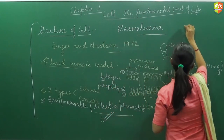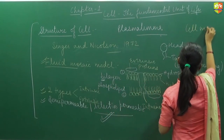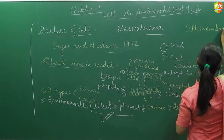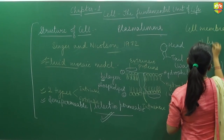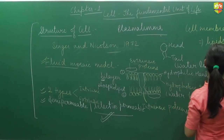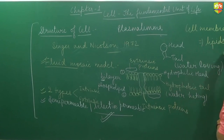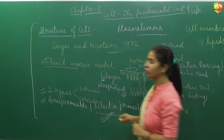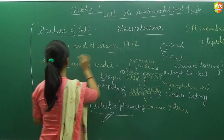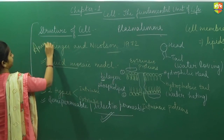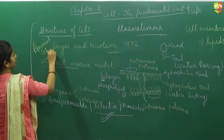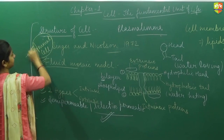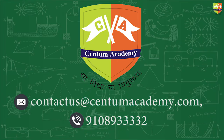If the question arises — what is the cell membrane made up of? — cell membrane is made up of lipids and proteins. Cell membrane is mainly found in the animal cell.